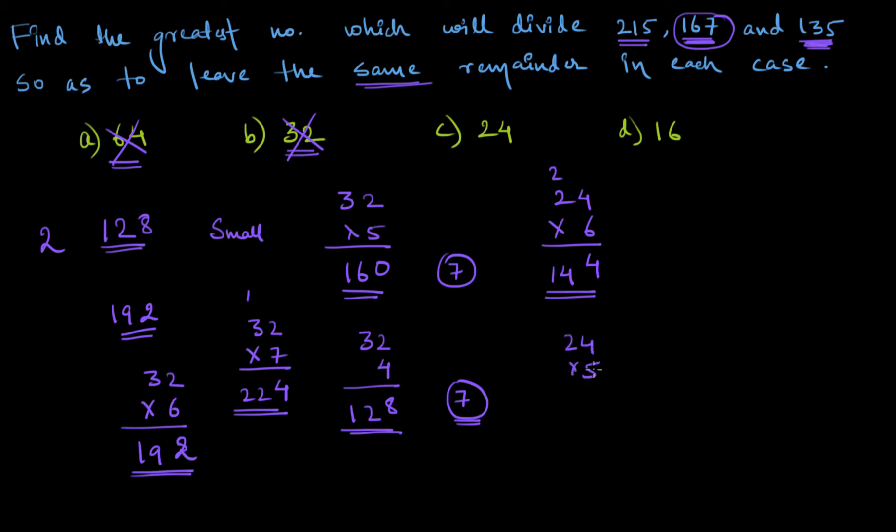24×5 is equal to 5×4=20, 2 carry, 5×2=10, 11, 120. So the remainder in case of 135 will be 15.